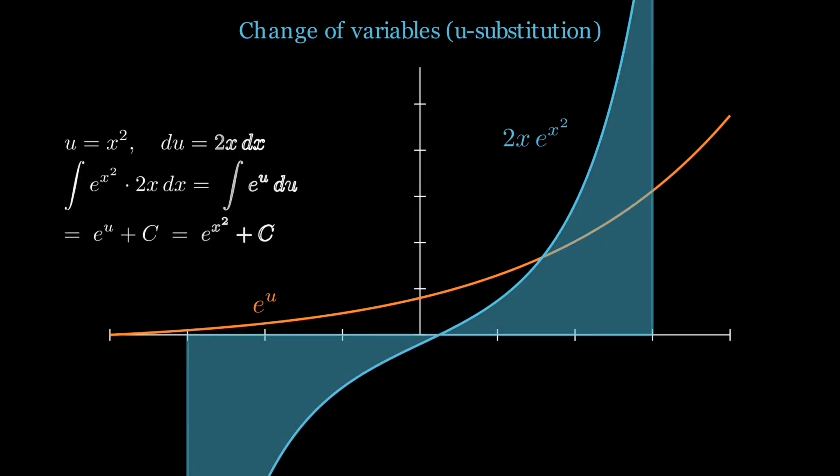The pattern is always the same. Spot the composition, see if the inner function's derivative is present up to a constant, switch to the new variable, and then switch back once you're done. It's just the chain rule but in reverse.